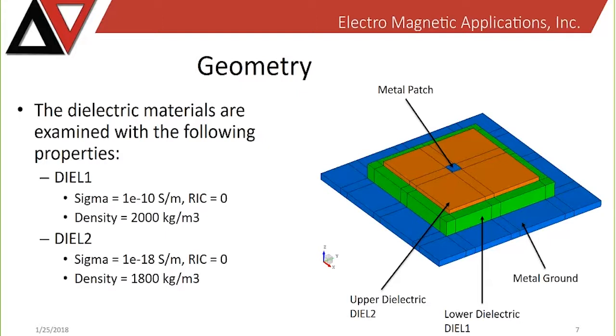The upper slab of dielectric is a very low conductivity material, with a conductivity of about 1E to the minus 18 Siemens per meter. In this simulation, we assume no radiation-induced conductivity, although that is a property that can be assigned to materials in EMA 3D internal.